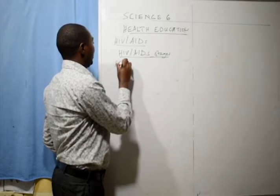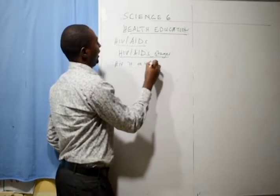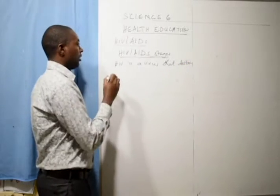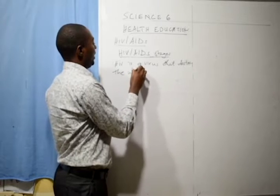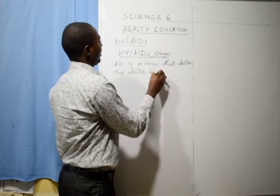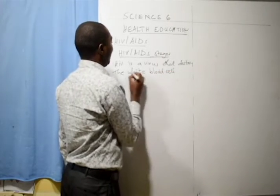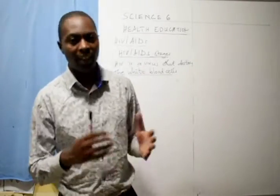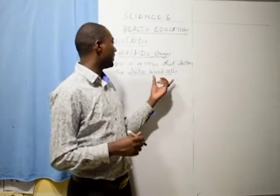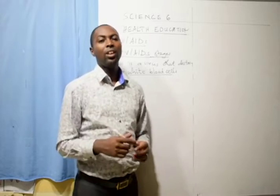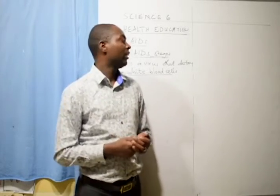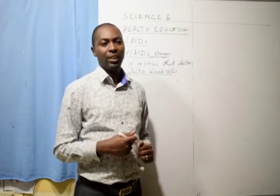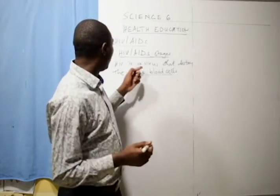HIV destroys the white blood cells, which are very important because they prevent our bodies from other infections. Once our immune system has been affected, or when the white blood cells have been destroyed, all other diseases stream into the body without any attack by any cell, and therefore you can have many diseases at the same time. That's why the virus is said to be dangerous.